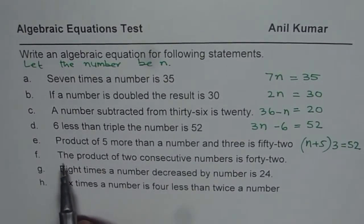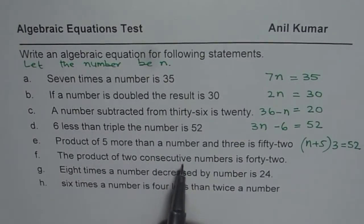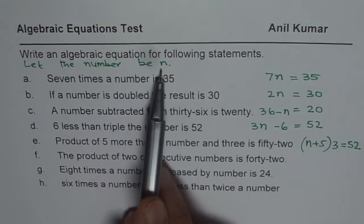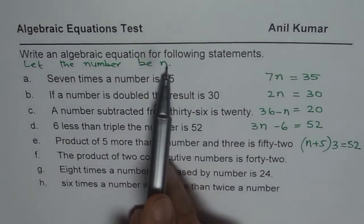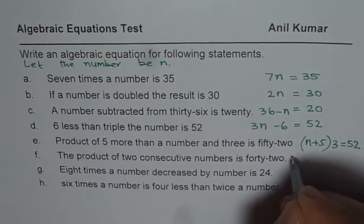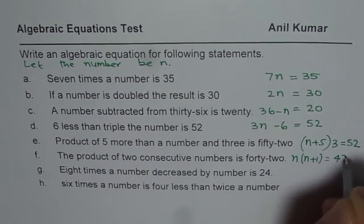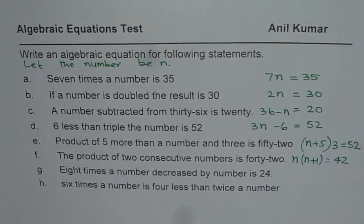Now the question is, product of 2 consecutive numbers is 42. Consecutive means numbers which come together. So if n is first number, the second number will be 1 more than n. Their product, that means n times n plus 1, should be equal to 42. That is how you should get this equation.